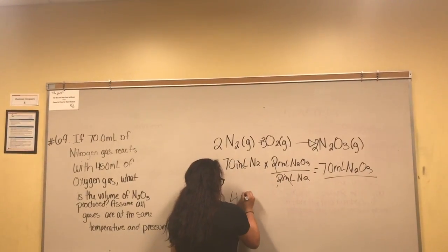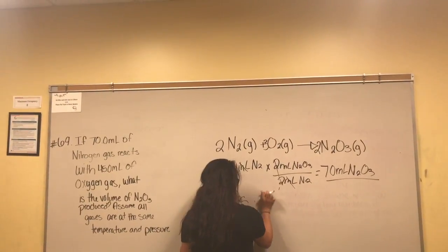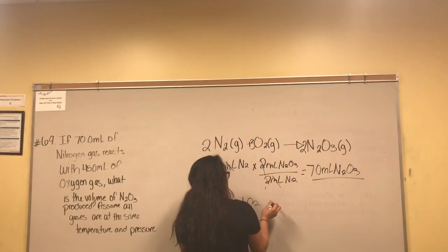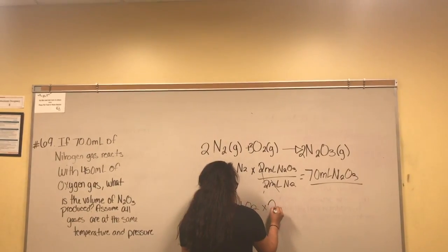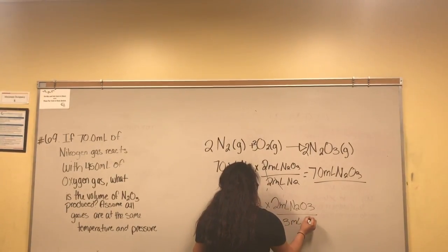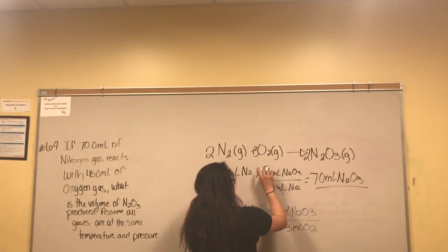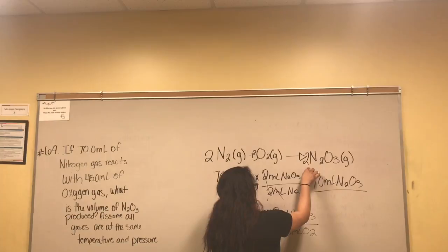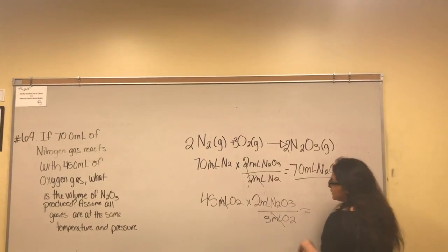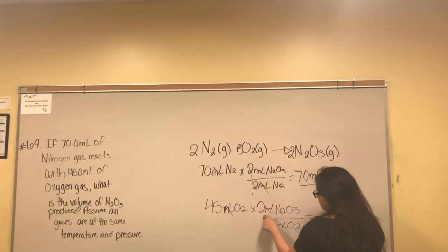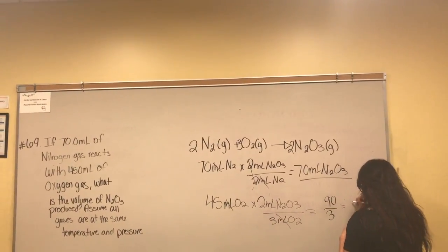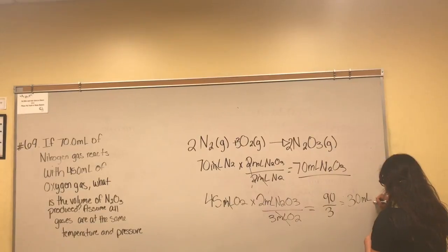For 45 milliliters of O2, that's your other given. Multiply by two milliliters of N2O3 over three milliliters of O2, because there are three O2s here and two N2O3s here. Cross cancel these. 45 milliliters of O2 times two milliliters of N2O3 gives you 90 divided by three, which equals 30 milliliters of N2O3.